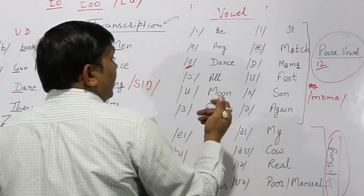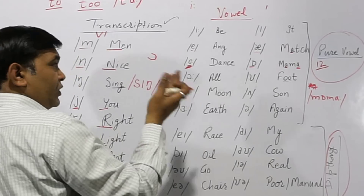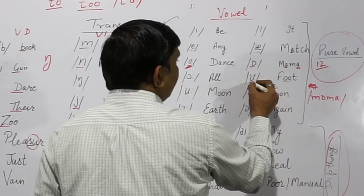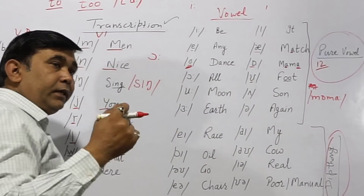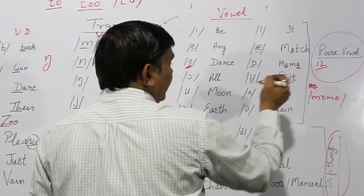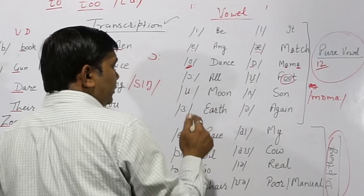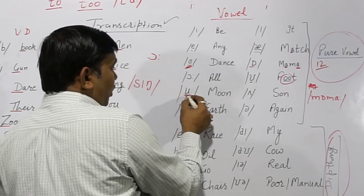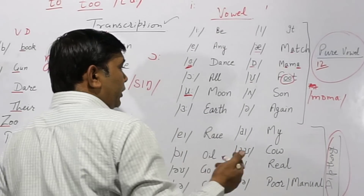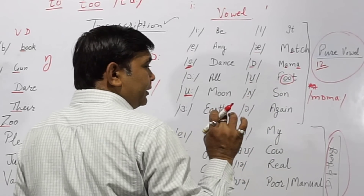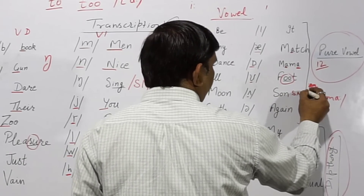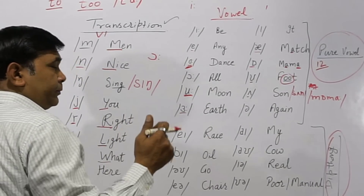Next is /ɔː/ — it is not 'all' with a flat sound, it is /ɔː/ — like a reversed c with two dots. Then small /ʊ/ — as in 'foot', 'book' — double-o giving a short /ʊ/ sound. Then /uː/ with two dots — long /uː/ — as in 'moon'.